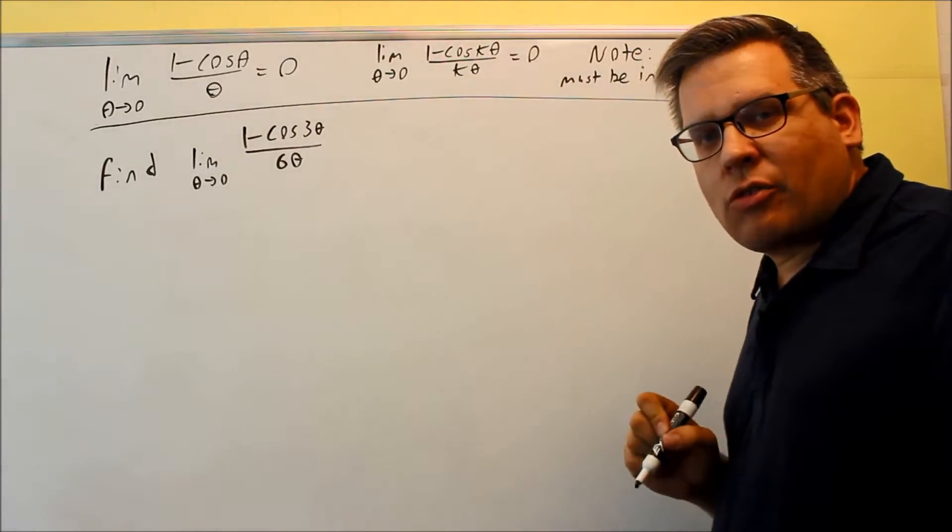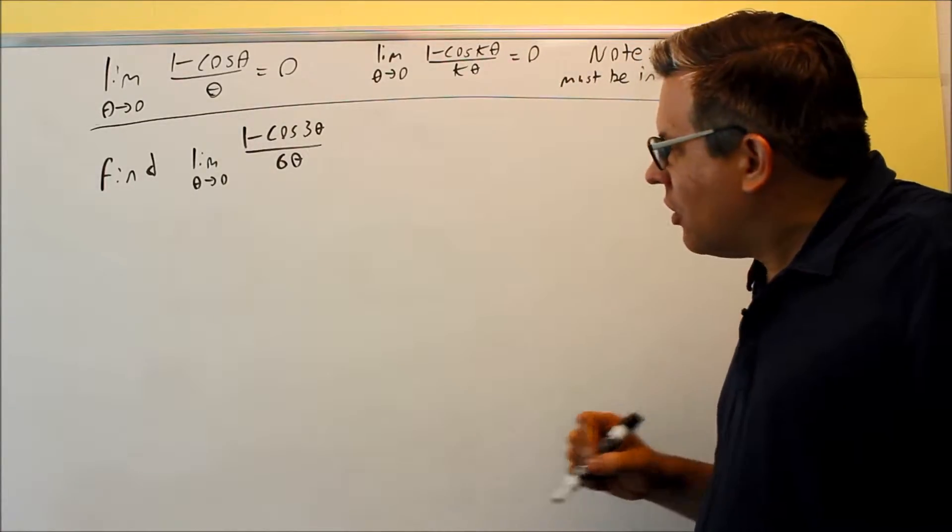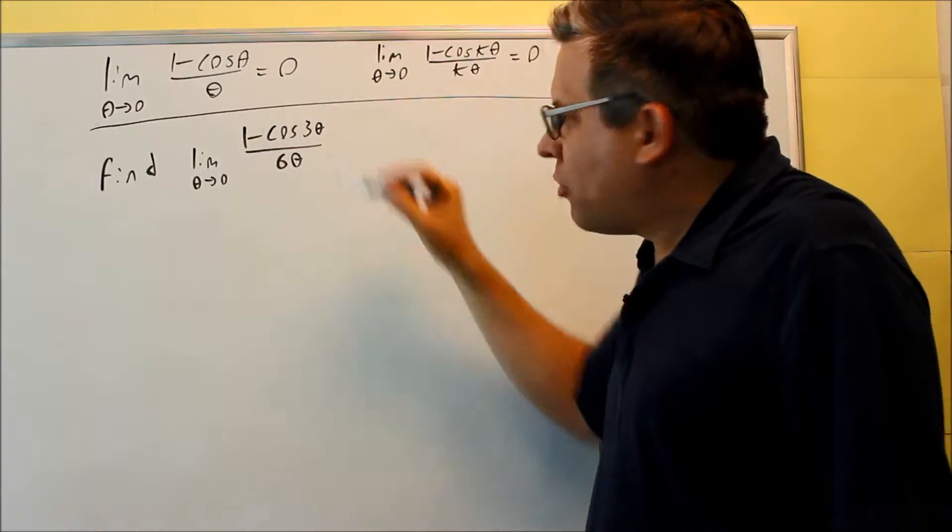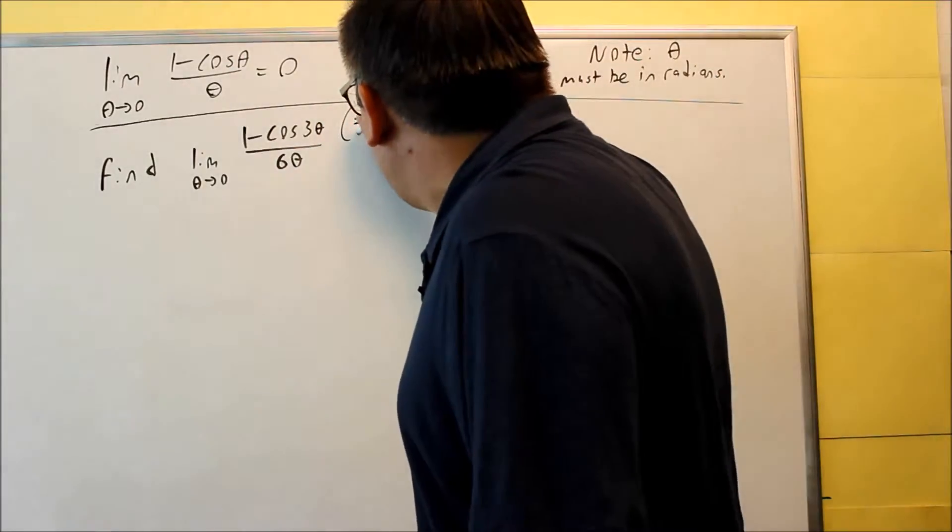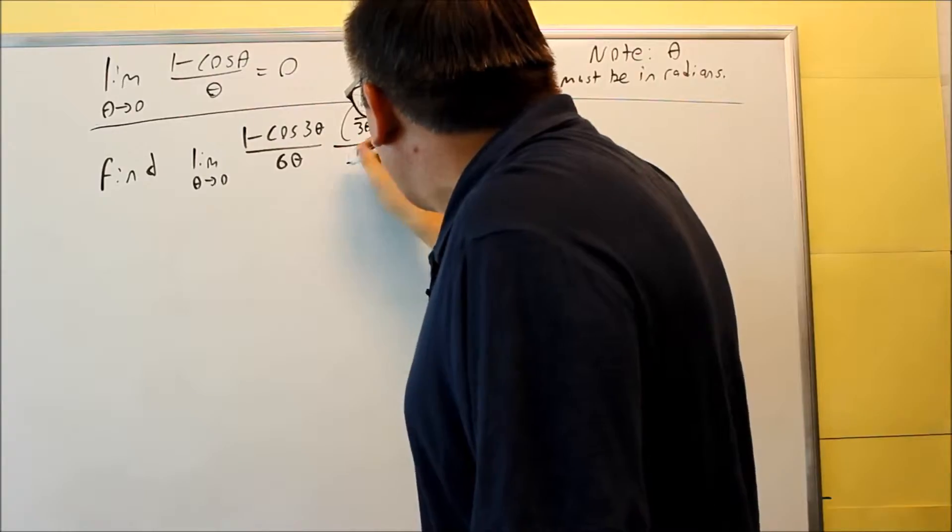So, we're going to do the same similar technique that we did before for the previous example. We want to get a three theta down below this one. So, I'm going to multiply top and bottom by one over three theta.